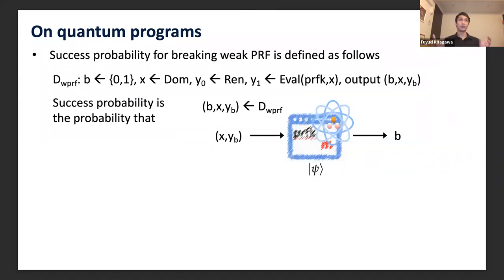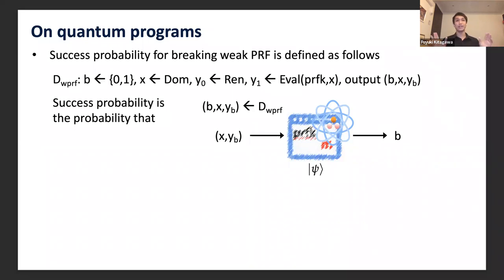The success probability of a quantum program for breaking weak PRF security is defined as follows. Let D_wprf be a distribution that generates a random bit b, random input x, random output y₀, and correct output y₁ of input x, and outputs (b, x, y_b). This distribution D_wprf roughly corresponds to the security game of weak PRF security. The success probability is the probability that, given x and y_b, the quantum program correctly guesses the bit b, where (b, x, y_b) is generated from D_wprf.